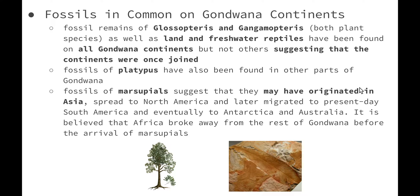The platypus was once thought to be unique to Australia. However, fossil evidence from 110-million-year-old opalised jaws suggests that monotremes — egg-laying mammals — originated in the Australian-Antarctic section of Gondwana. Sixty-million-year-old rocks in South America have been found to contain platypus fossils, suggesting they migrated from Australia towards South America when the landmasses were joined as part of Gondwana. Fossils of marsupials suggest they may have originated in Asia, spread to North America, and later migrated to South America, then Antarctica about 40 million years ago, and finally Australia. Africa is believed to have broken away from Gondwana before marsupials were able to reach it.